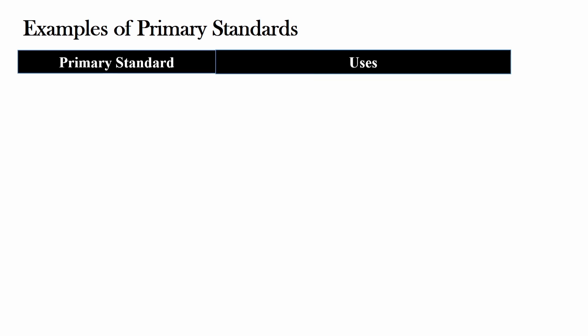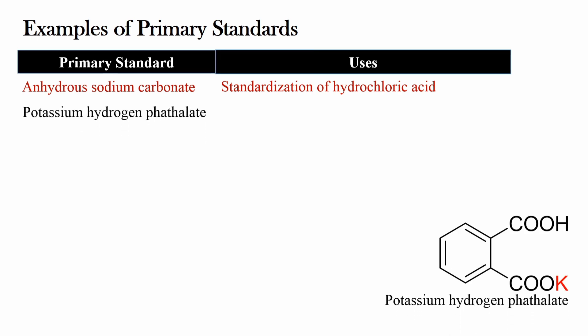Now, the example of primary Standard. In practice, it is difficult to find out the ideal primary Standard. Here we will know about the commonly used primary Standard such as anhydrous sodium carbonate which is used as primary Standard in the Standardization of hydrochloric acid. Potassium Hydrogen Phthalate is used as primary Standard in the Standardization of sodium hydroxide solution.